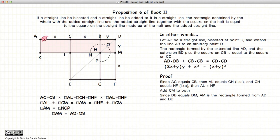But what is AM? Well, AM is AD times DM, but DM equals BD, so AM is equal to AD times BD. So AM equals AD times DB. So we have AD times DB is equal to NOP. We add CB squared, or LG, to both sides of this equality.